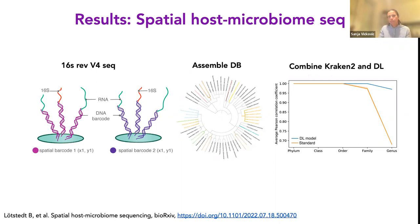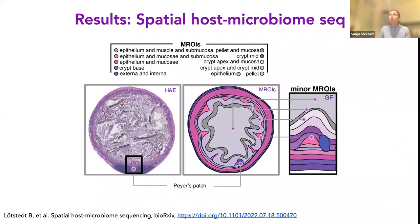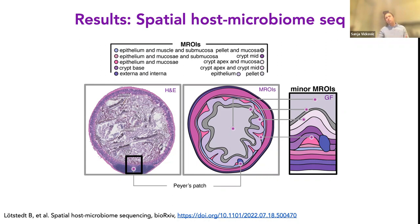We found we couldn't use Kraken2 efficiently to classify our data because it's not typical 16S sequencing — it's much shorter and only has one reverse 16S primer, not a primer pair. So we built a deep learning model on top of Kraken2 to efficiently classify the spatial host microbiome data. After that, we went through the logic of needing a control: a germ-free mouse, and a positive control: an ASF mouse — a mouse with a very specific flora injected into a germ-free mouse, supposed to recapitulate the full flora of a normal laboratory mouse.